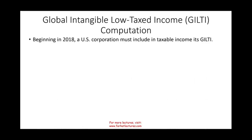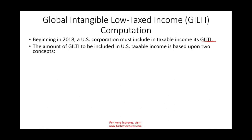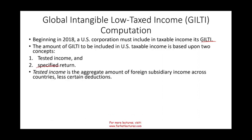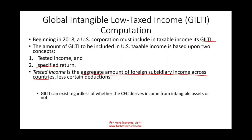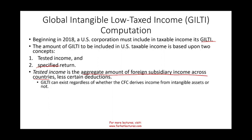Beginning in 2018, U.S. corporations must include GILTI. How do we compute GILTI? The amount to be included is based upon two concepts: tested income and specified return. Tested income is the aggregate amount of foreign subsidiary income across countries, less certain deductions — essentially all your active income that's not already subpart F income. GILTI can exist whether the corporation derives income from intangible assets or not. So they don't care whether you have intangible assets listed on the balance sheet — you are still subject to GILTI.